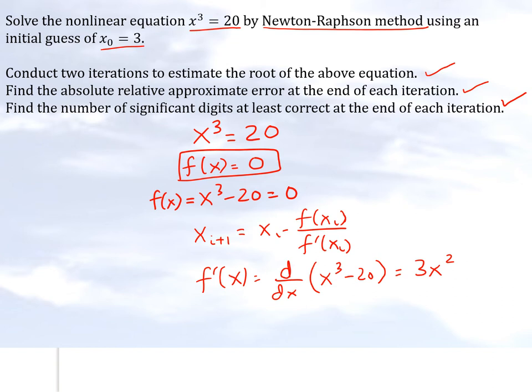So now we have everything needed in order to solve the problem. Let's recall again, we have x of i plus 1 equal to x of i minus f of xi divided by f prime of x of i.